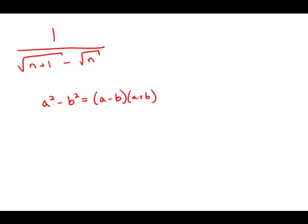So I'm going to consider the denominator here as a minus b. And what I'm going to multiply it by is a plus b. And of course, if I multiply the denominator by that, I have to also multiply the numerator by that — I always have to multiply the numerator and the denominator by the same thing.